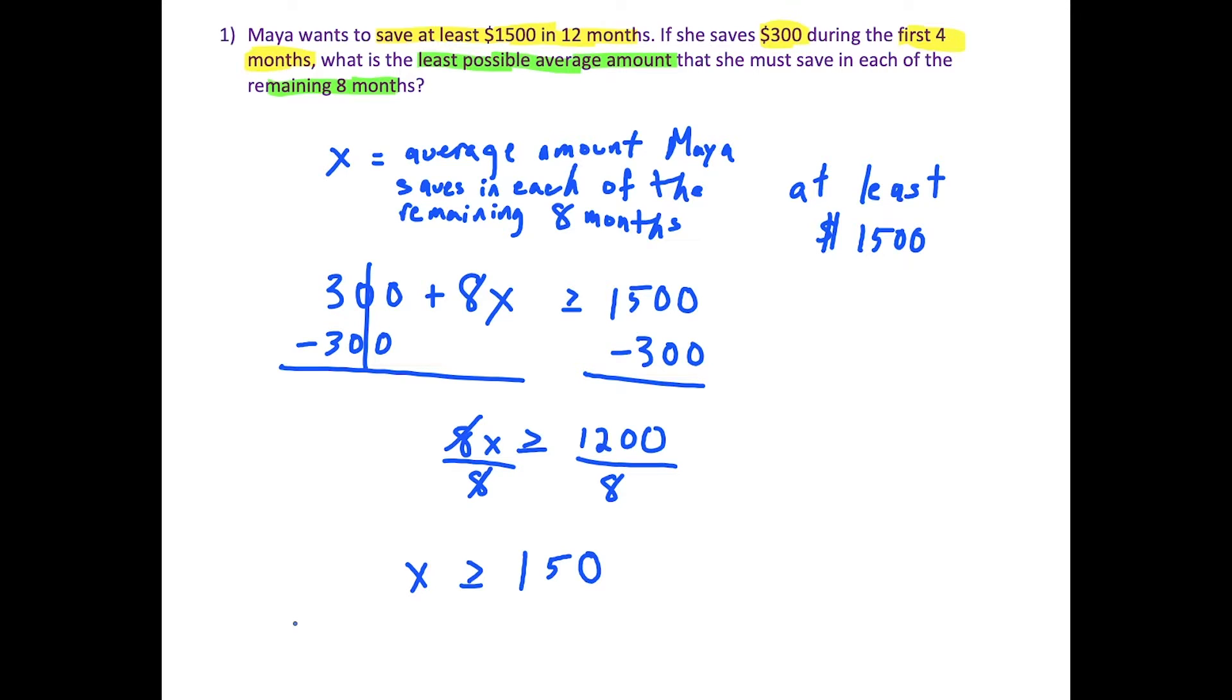Now we just have to interpret this answer. If x is greater than or equal to 150, in the context of the question, that means that Maya has to save an average amount of at least $150 a month for the remaining eight months in order to reach her goal.